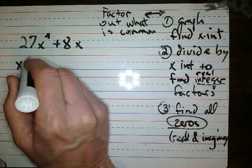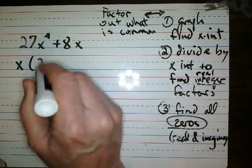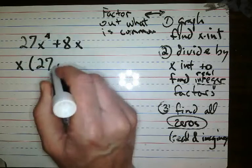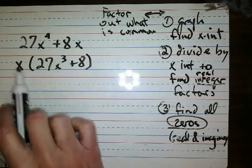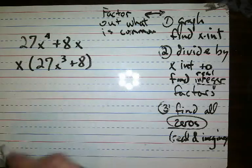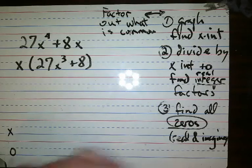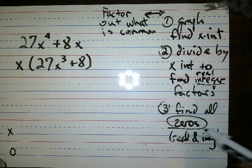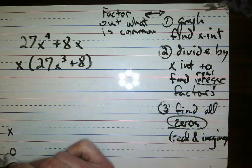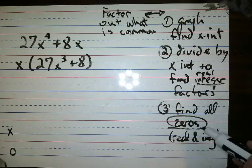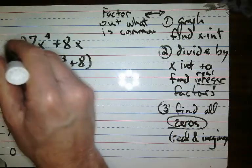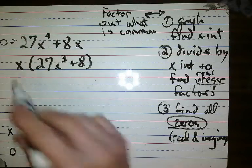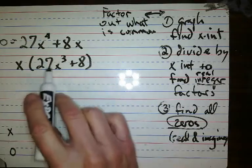I know I have x times 27x cubed plus 8. Now, if x is a factor, that means 0 is one of the x-intercepts. So I know one of the x-intercepts already is 0, because 0 makes this thing equal 0.